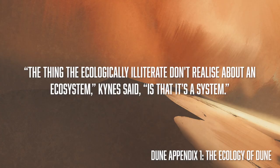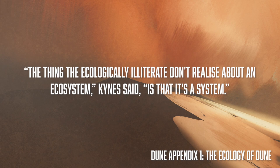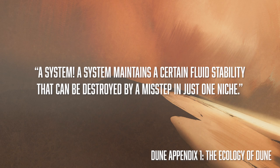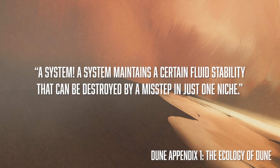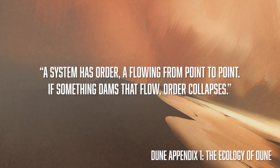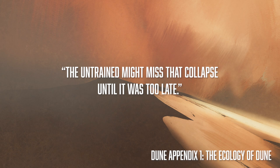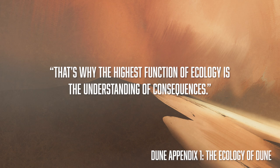Thanks for watching, and happy reading. "The thing the ecologically illiterate don't realize about an ecosystem," Keynes said, "is that it's a system. A system maintains a certain fluid stability that can be destroyed by a misstep in just one niche. A system has order, a flowing from point to point. If something dams that flow, order collapses. The untrained might miss that collapse until it was too late. That's why the highest function of ecology is the understanding of consequences."